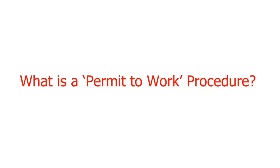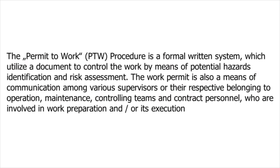What is a Permit to Work Procedure? The Permit to Work procedure is a formal written system which utilizes a document to control work by means of potential hazard identification and risk assessment. The work permit is also a means of communication among various supervisors belonging to operations, maintenance, controlling teams and contract personnel who are involved in work preparation and its execution.